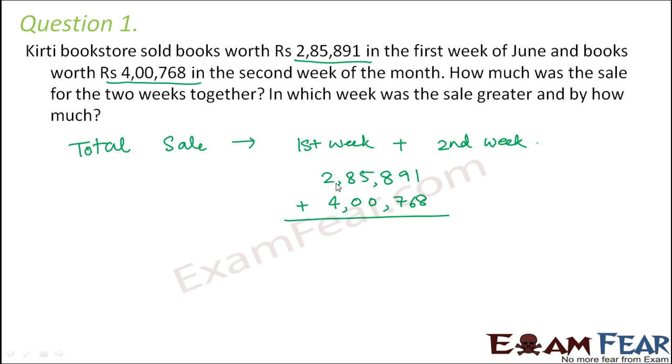Now it is very important that we place the two numbers correctly. Lakhs should be with lakhs. The thousands should be in the thousands place. Again, the hundreds, tens and units should be in their places accordingly. So now when you find the sum, 8 plus 9 will be...